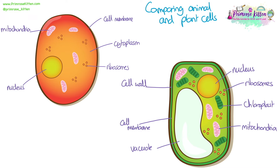When comparing animal and plant cells, there are only three differences — the three features found in plant cells but not in animal cells: the cell wall, the vacuole, and the chloroplasts. Otherwise, everything else is the same.